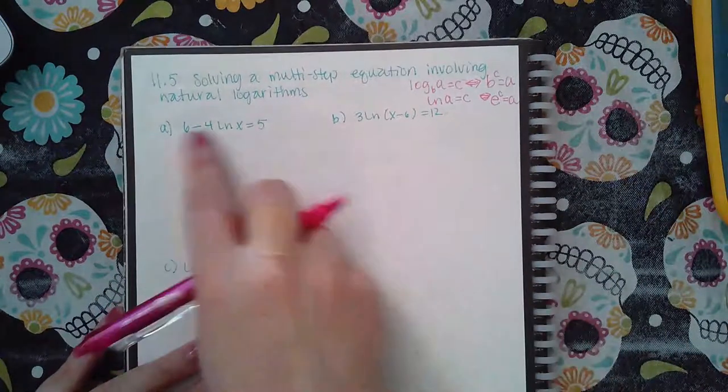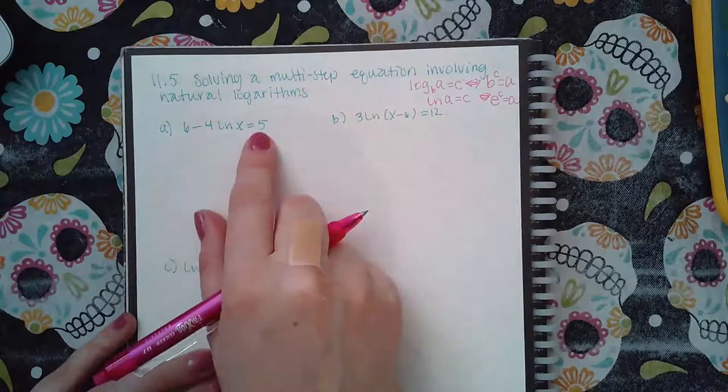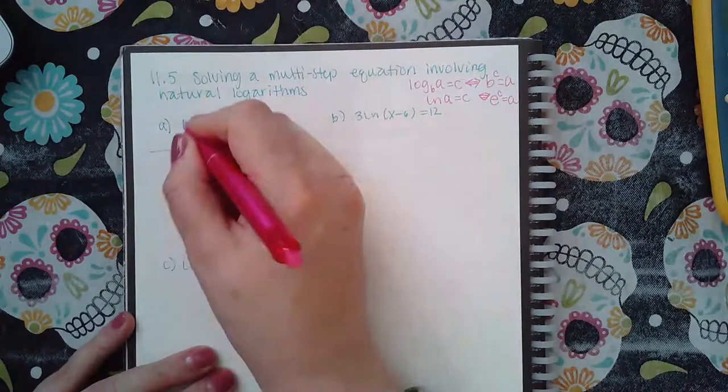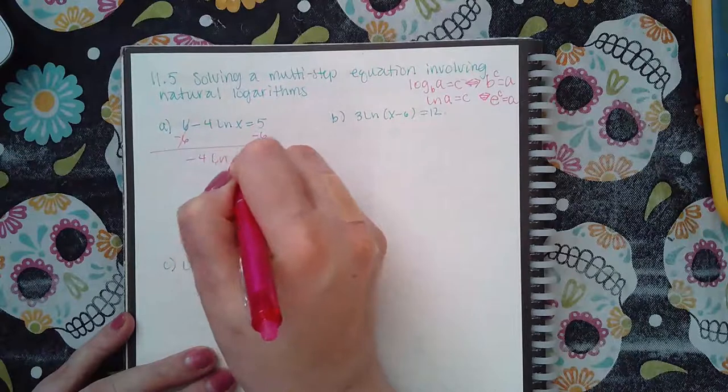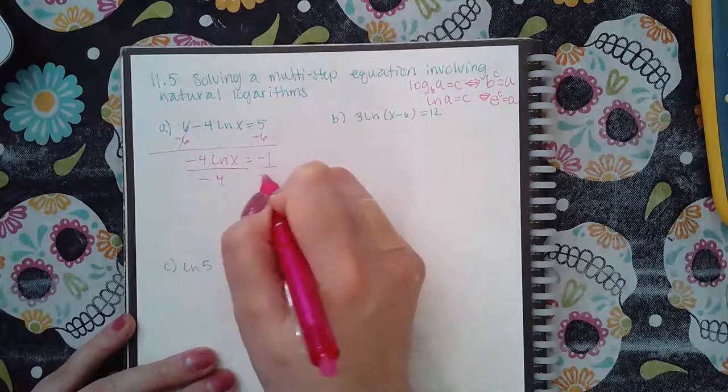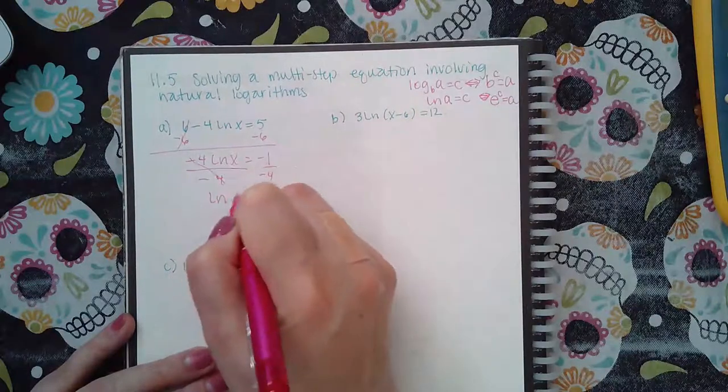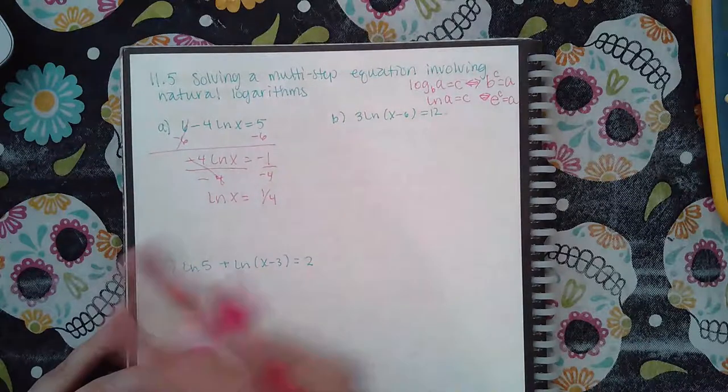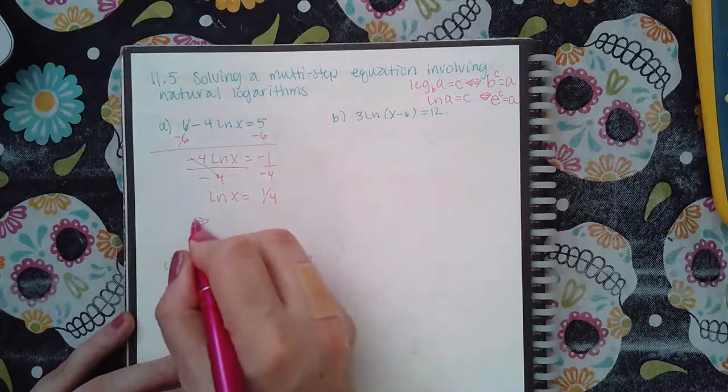Now before we can apply that though in this problem, I do have to get rid of the six, so I'm going to minus six on both sides. I have negative four ln of x equal to negative one, and then I have to divide by the coefficient so that I can get the ln of x completely by itself and I get positive one-fourth.